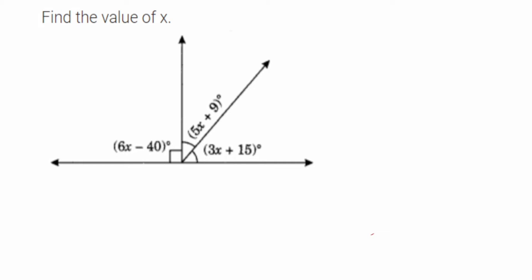Hey everyone, here is a question from lines and angles. The question is find the value of x. This is a figure given to us. They have given three angles: first, second, and third. If you see, all these three angles are lying on this straight line. We know that the straight angle is 180 degrees.